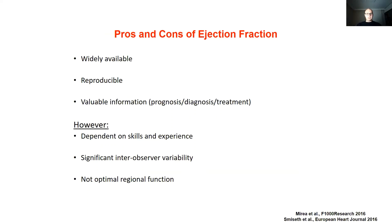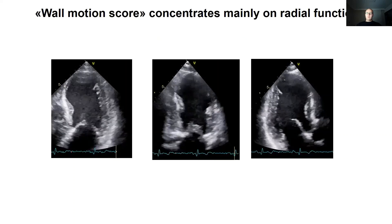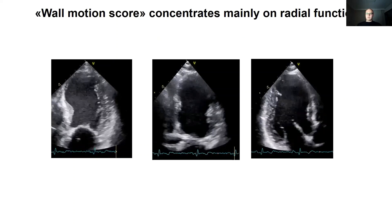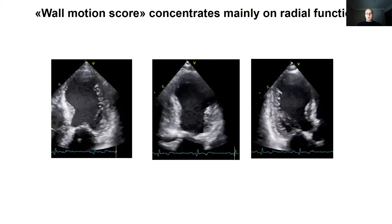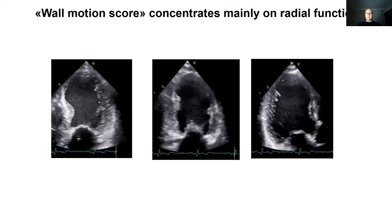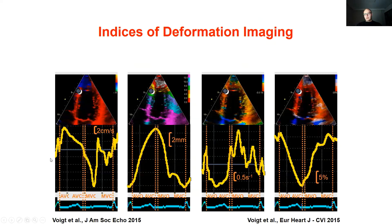However, ejection fraction is mainly affected by the experience and skill of the sonographer with high variability, and it does not give information about regional function. In addition, ejection fraction is not directly showing contractility. Wall motion scoring, which is also a widely used method for evaluating regional function, is subjective and highly operator dependent. Mainly, radial function is estimated by checking myocardial shortening and thickening in wall motion scoring.